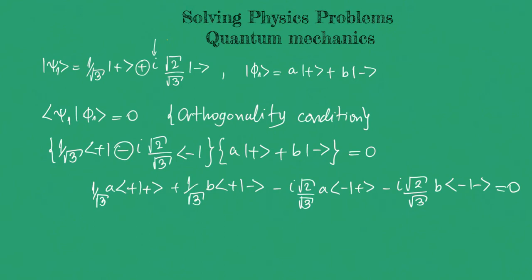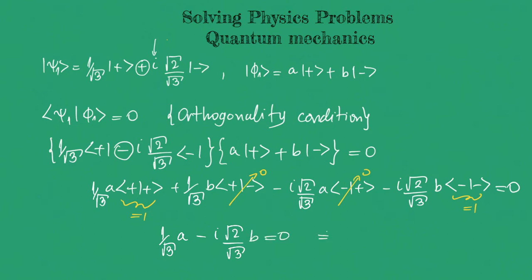As we discussed before, the cross terms ⟨+|−⟩ and ⟨−|+⟩ are 0, while ⟨+|+⟩ and ⟨−|−⟩ equal 1. So we end up with (1/√3)·a − (i√2/√3)·b = 0, which simplifies to a = i√2·b.